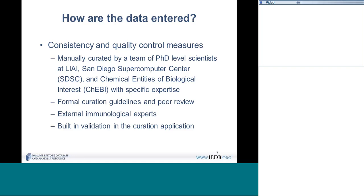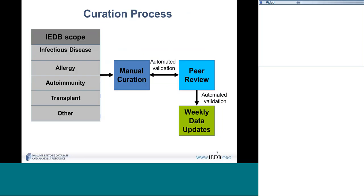The applications that curators use to enter data have their own validation — as you enter data, it compares fields and validates as you go. Once the curator is happy with what they've done, they submit it and another round of validation is performed. Then another curator reads everything again, and the two work together until they're satisfied with the results. Every week, updates of around 15 to 20 new papers go out to the website.